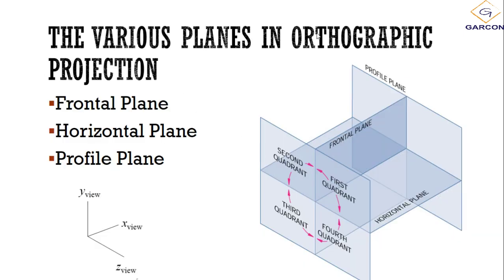There are various planes used in orthographic projection: the frontal plane, the horizontal plane, and the profile plane. The frontal plane corresponds to the x-axis, the horizontal plane to the z-axis, and the profile plane to the y-axis. These three different axes are why it is called three-dimensional — representing length, width, and height or depth.